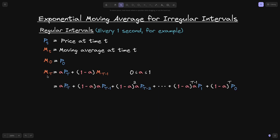When we expand this exponential moving average, it turns out that previous prices are multiplied by a power of 1 minus alpha. For example, the most recent previous price is multiplied by 1 minus alpha, the price before that by (1 minus alpha) squared, and the one before that by (1 minus alpha) cubed, and so on all the way to the first price. This is the calculation for moving average at a regular interval, for example every one second.